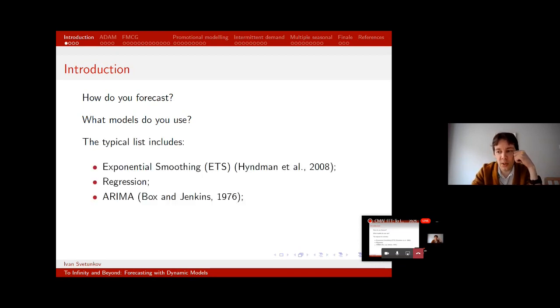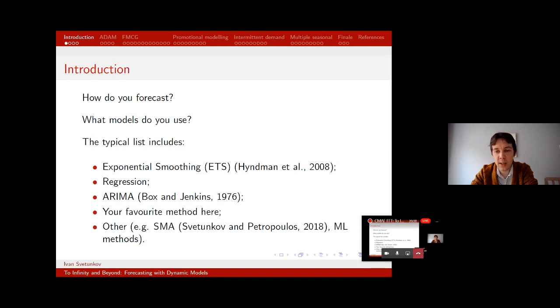But in general, if we are interested in demand forecasting, then it would be exponential smoothing in ETS framework. It can be a regression or it can be ARIMA model. These are the three main. Yes, you can have something else, your favorite model here or method here, and you can have simple moving averages or machine learning methods or anything else. But these three first three are in a way the most fundamental. So any paper you look in statistics, it will mention one of these three. And in a way we also know that if we want to compare our forecasts with something, if we want to make sure that our model is better, then we need to have benchmarks and these three are typical benchmarks in the area.